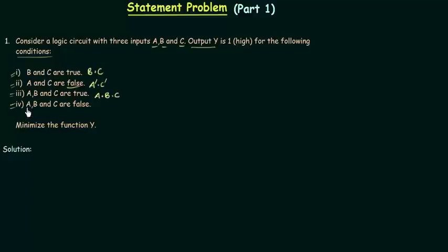Fourth condition is A, B and C are false. So we have to take A complement and B complement and C complement. Now we have four conditions and all these conditions will make output Y equals to 1.